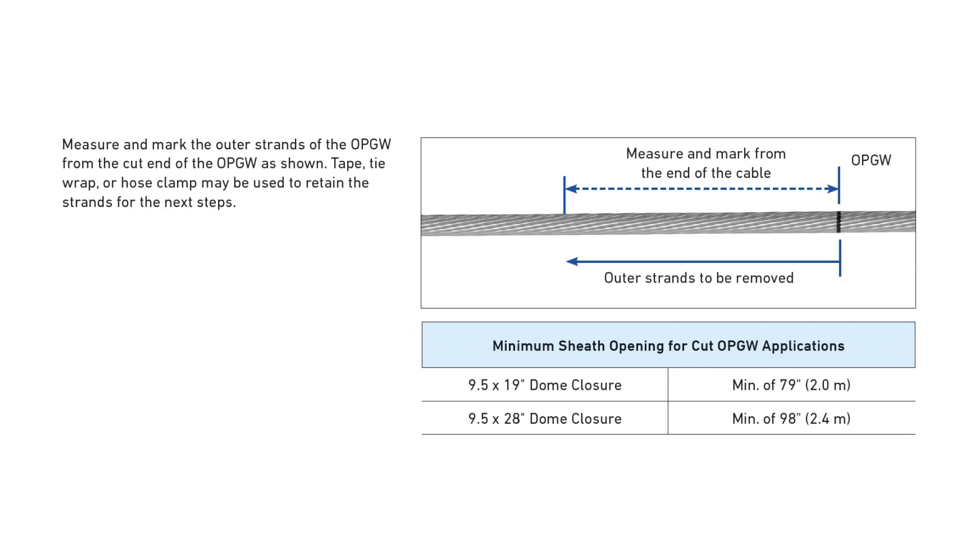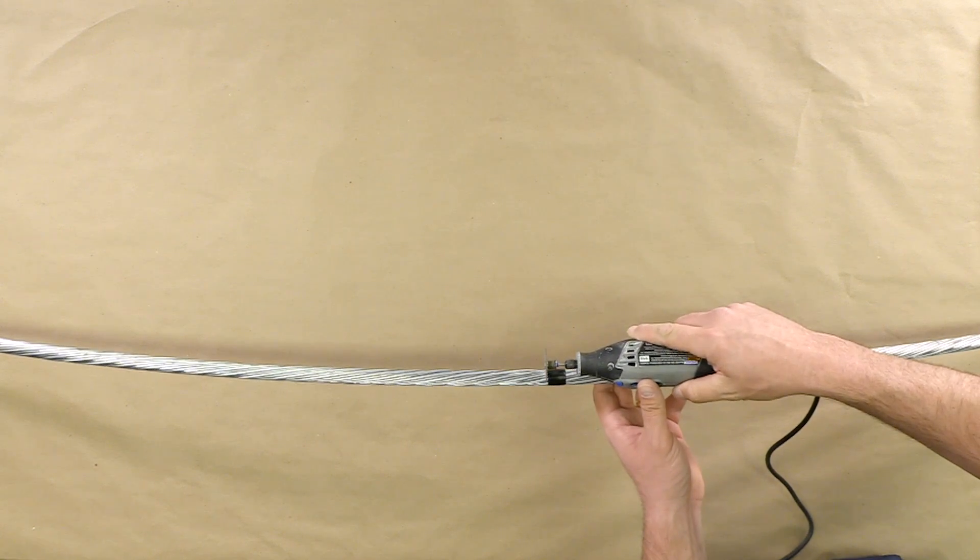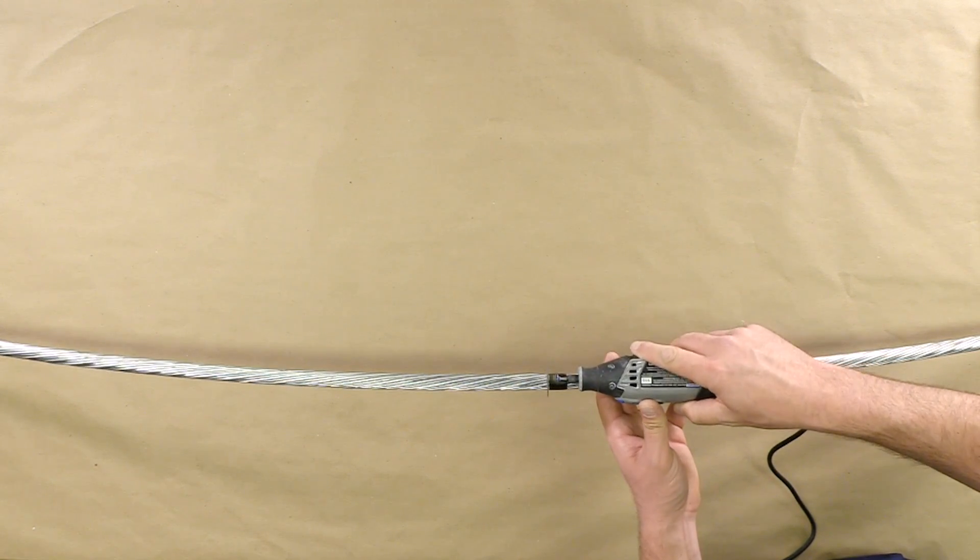Mark the cable at the appropriate length from the end according to the application procedure. Use the Dremel to score the outer layer of the cable at the marked location.